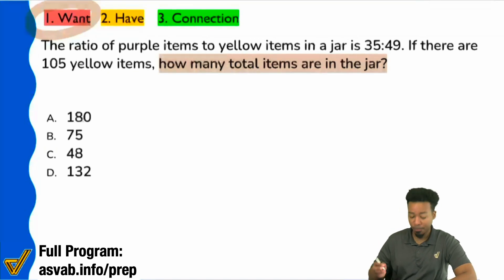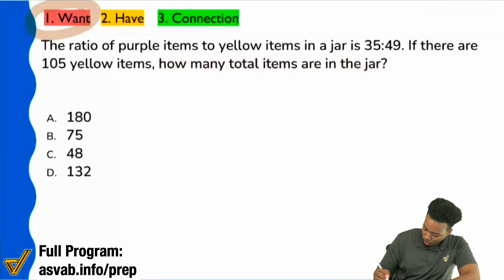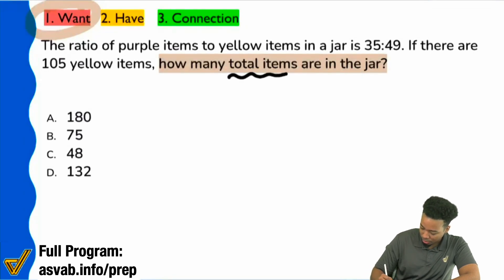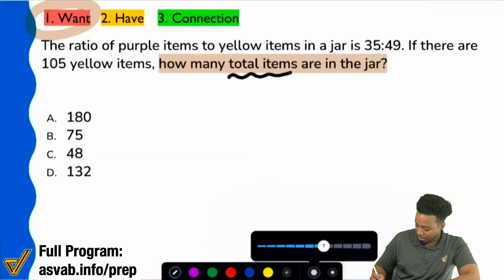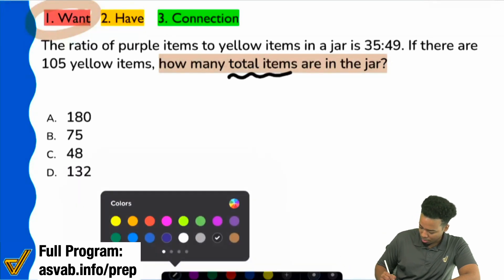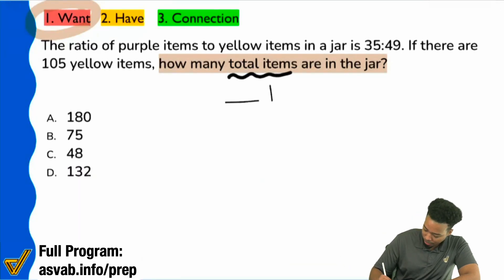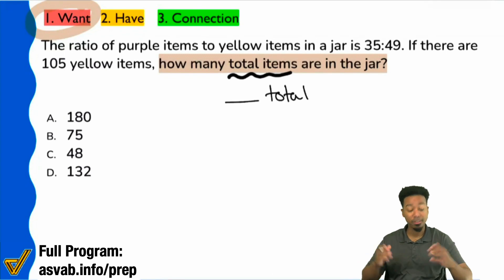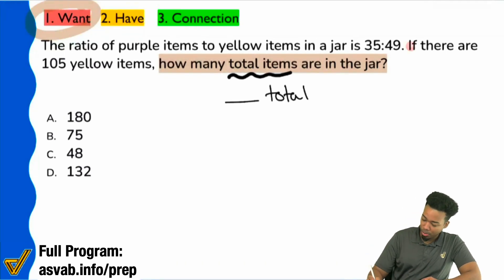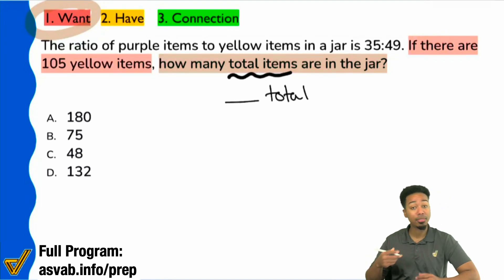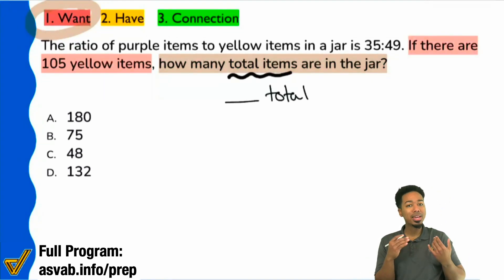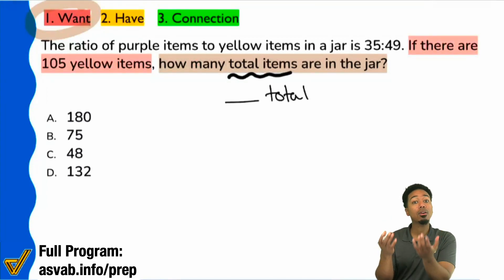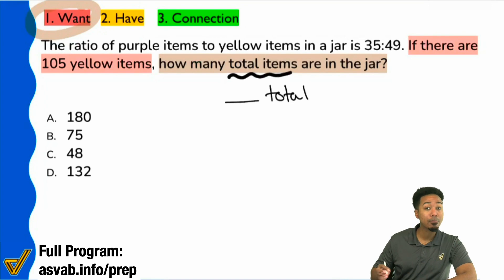Don't confuse yourself with all the information. I see here that I want to know how many total items are in the container. So now that I know I want to find the total items, I'll go ahead and mark that down — blank total. One thing I also want to take advantage of is the word 'if.' Whenever we see the word 'if' in the problem, like 'if there are 105 yellow, how many total?' — that's basically telling you that the number of total items and the number of yellow items are related. They are being compared. Make sure to write that down because that could be very important information.